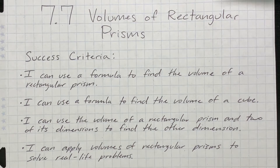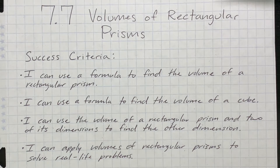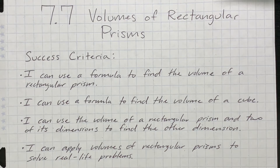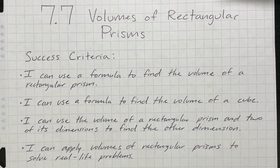Our success criteria: we're going to be able to use a formula to find the volume of a rectangular prism and also use that formula to find the volume of a cube. We're looking at three-dimensional figures, so we're going to use an exponent of 3. We're also going to use the volume formula and two known dimensions to find the unknown missing dimension, and apply volumes of rectangular prisms to solve real-life problems.